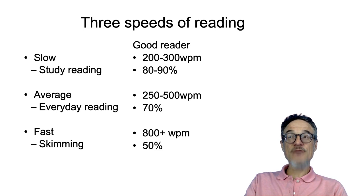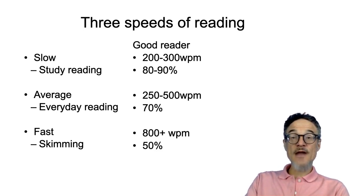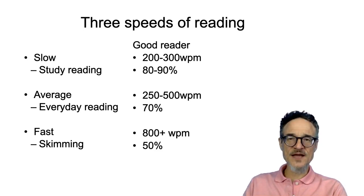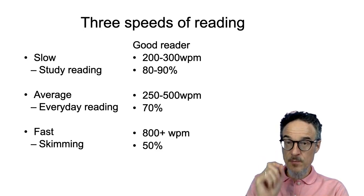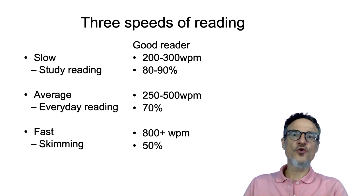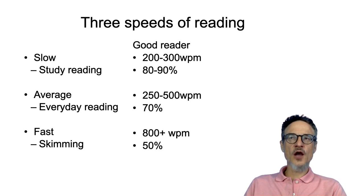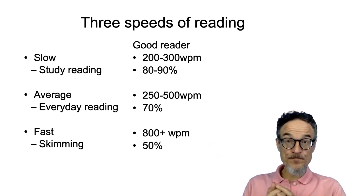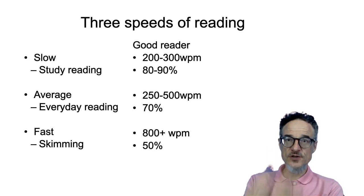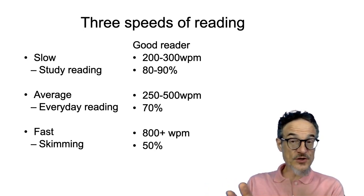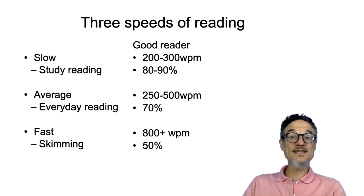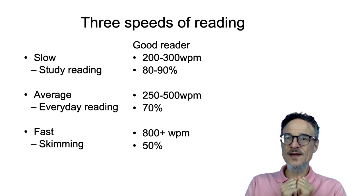A good reader can do everyday reading — reading a novel or a magazine — at between 250 and 500 words per minute. For everyday reading you don't need to understand 80 or 90%; about 70% is enough. If you're reading a novel, you don't need to understand completely everything that's happening — you just need to follow the story. Skimming, on the other hand, means a good reader can read at over 800 words per minute and get about half the meaning. This is very useful if your teacher hands you a big book and tells you to read it before next week — you can skim to get an idea of what the book is about, and if you need more details later, you know what to look for.